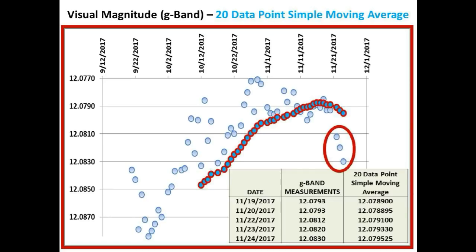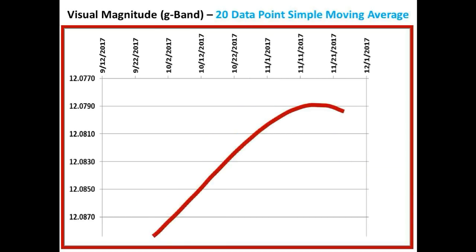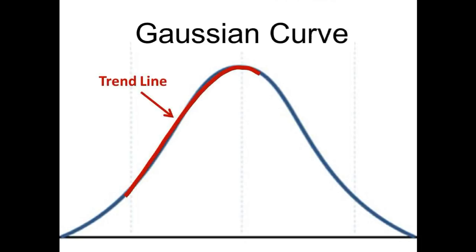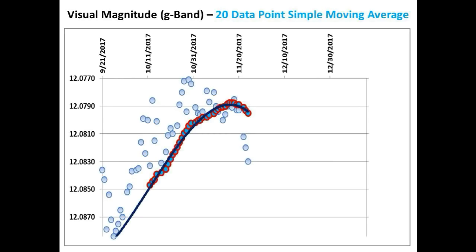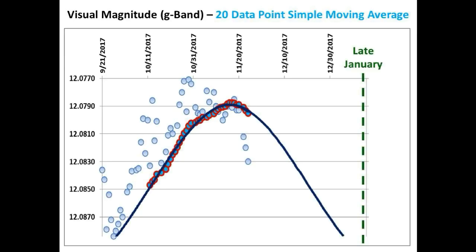So the best fit curve for our 20 data point simple moving average is shown here. The shape of this trend line curve looks very similar to that of a Gaussian curve. If you superimpose this trend line on the shape of an actual Gaussian curve, you get this fit. So if this curve truly follows a Gaussian shape, we estimate that the flux of Tabby's Star will return back to its previous magnitude that it had just prior to the brightening event, and the time that the brightening will completely evaporate would be sometime late January or perhaps early February.